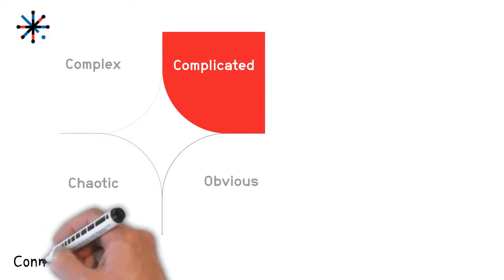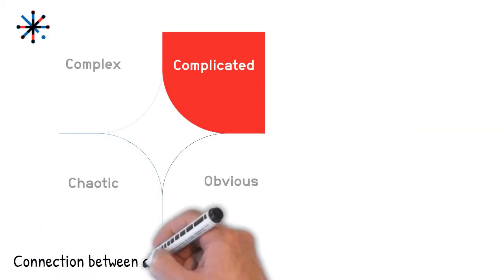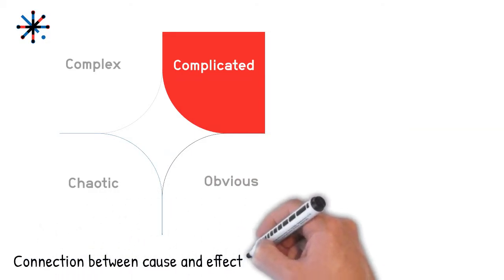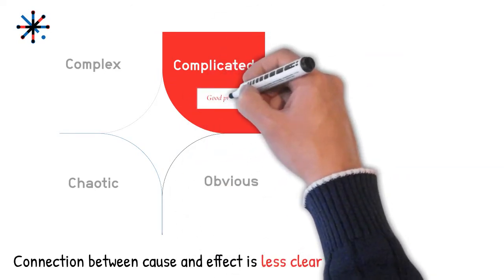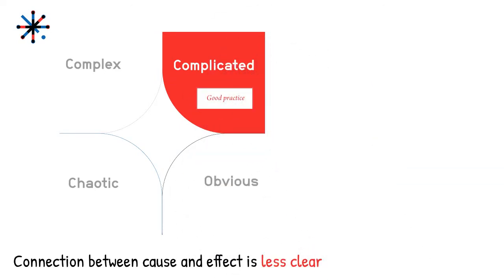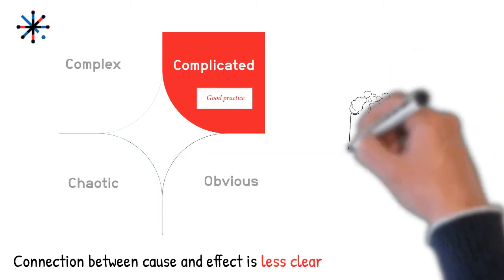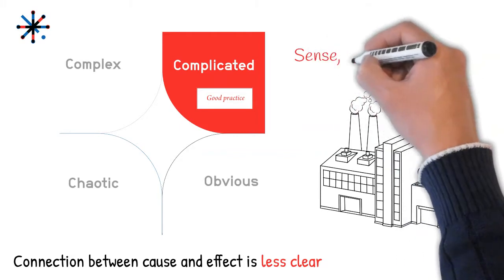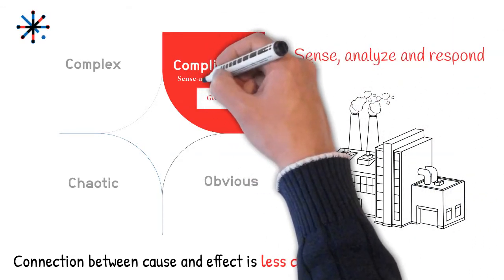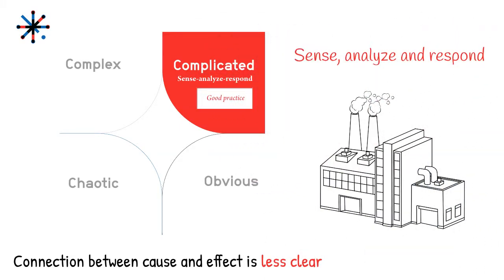In the complicated domain, the connection between cause and effect is less clear. It requires experts or domain expertise to figure it out. This is the domain where there are good practices. An example is building a factory. The strategy in these situations is to sense, analyze, and respond: gather data, define a good strategy, and take action.